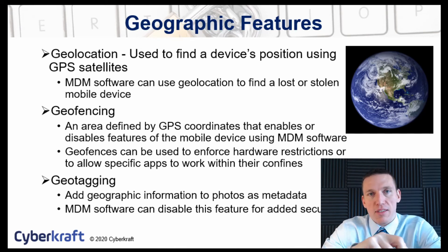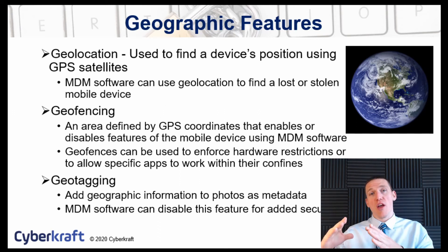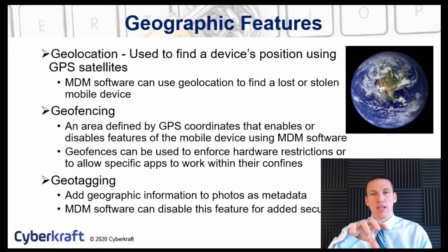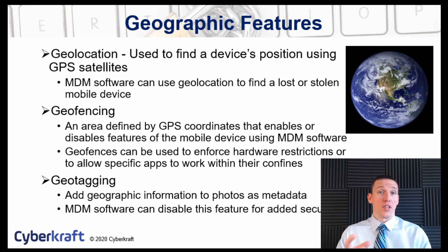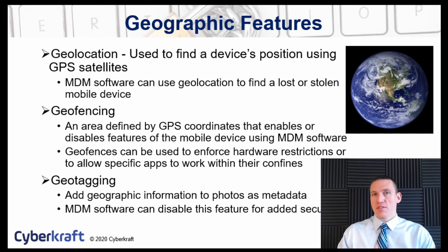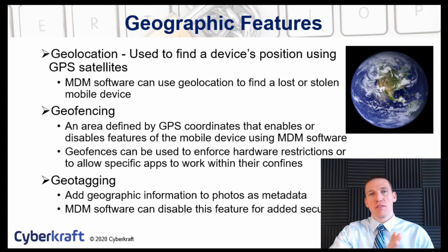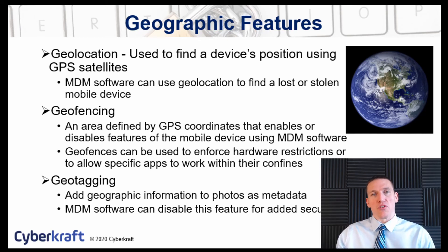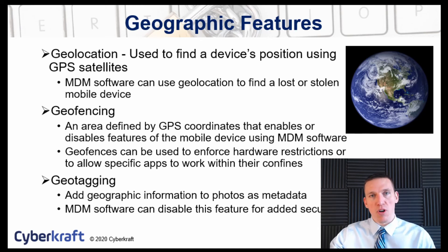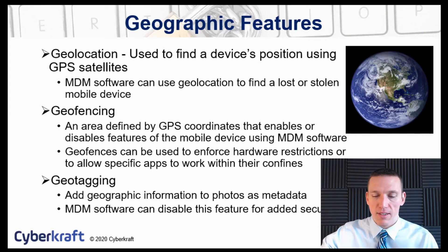Geofencing is a method of allocating certain geographical areas that contain specific security settings. You might place a geofence around your office building, and whenever a device is within that geofence, certain settings are enabled or disabled. For example, imagine a secure information facility where you don't want employees taking pictures — you could set up a geofence around that facility so that all corporate-issued devices automatically switch off the camera and microphone when an employee enters. That is a use of geofencing.